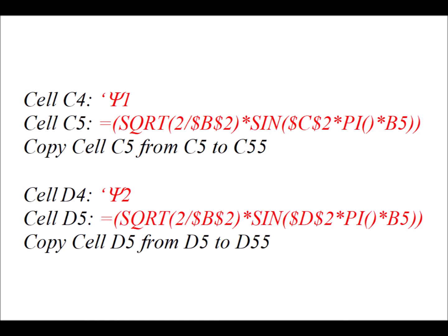In cell C4 type apostrophe psi 1 — that's the label for the first eigenfunction. Then in cell C5 type in the formula exactly as written, making sure to include the equal sign and parentheses in the correct locations. Copy cell C5 down from C5 to C55. Similarly, in cell D4 type apostrophe psi 2, then type the formula in cell D5. That gives the value of the eigenfunction at any particular x/L position. Copy cell D5 down from D5 to D55. This gives a list of both psi 1 and psi 2 values from 0 to 1.